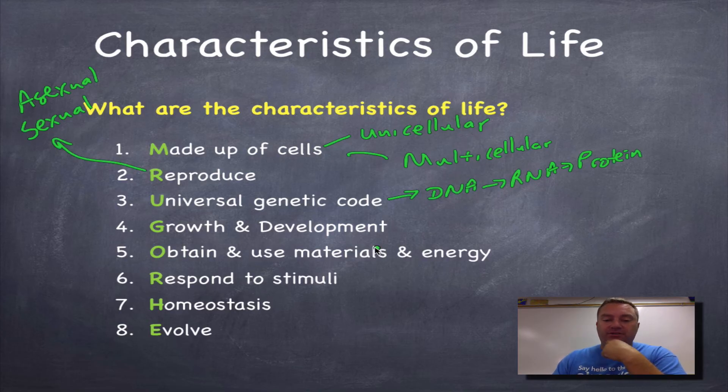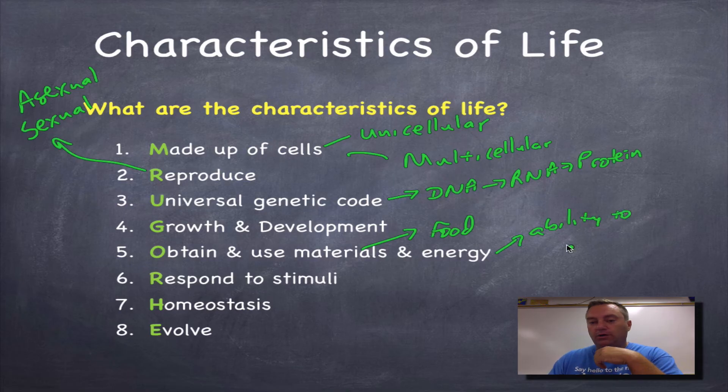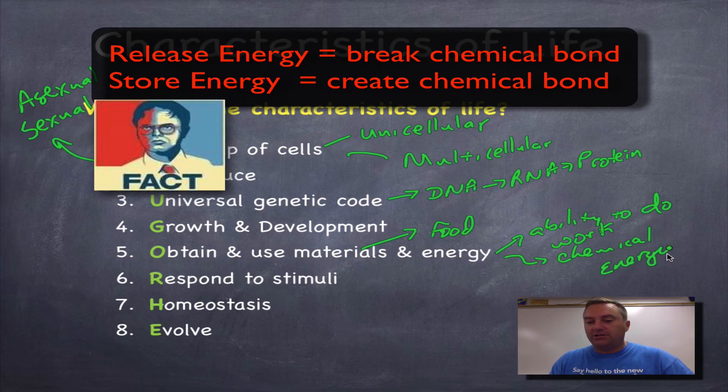Obtain and use materials and energy. Think of materials as food. And those would be like your carbohydrates, your lipids, et cetera. And then energy is the ability to do work. And when it comes to biology, we're talking about chemical energy. And we're going to get to that stuff in chapter two.